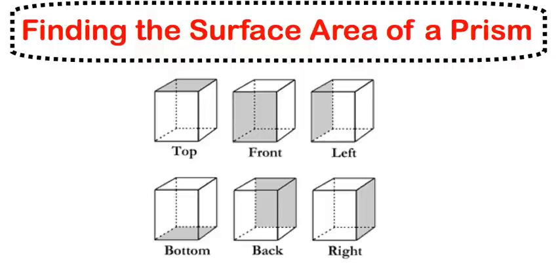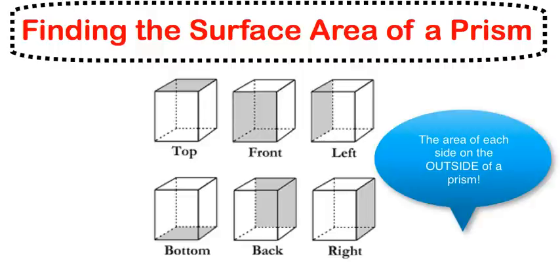In this lesson, we'll be finding the surface area of prisms. When you think surface area, I want you to think outside of the shape. For example, with volume, if we were talking about a present we're wrapping, volume is what we can fit inside the box. Surface area is how much wrapping paper we would need to cover the outside of the box.